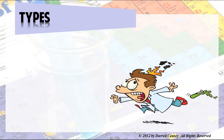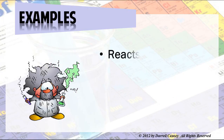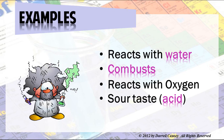Types of chemical changes include things like flammable, corrosive like rust, pH like acid and basic, and explosive — kaboom. All of these are types of chemical properties and chemical changes. Examples would be things like reacts with water, combusts, reacts with oxygen, and a sour taste — that would be an acid — or bitter taste, that would be basic. And usually that comes from a chemical reaction and creates chemical changes.